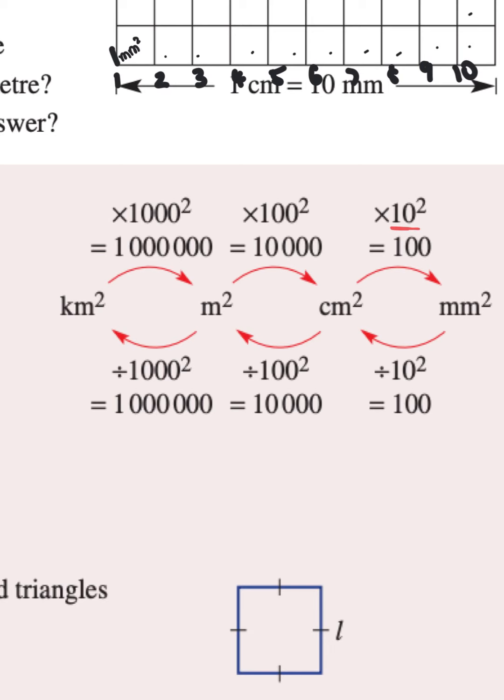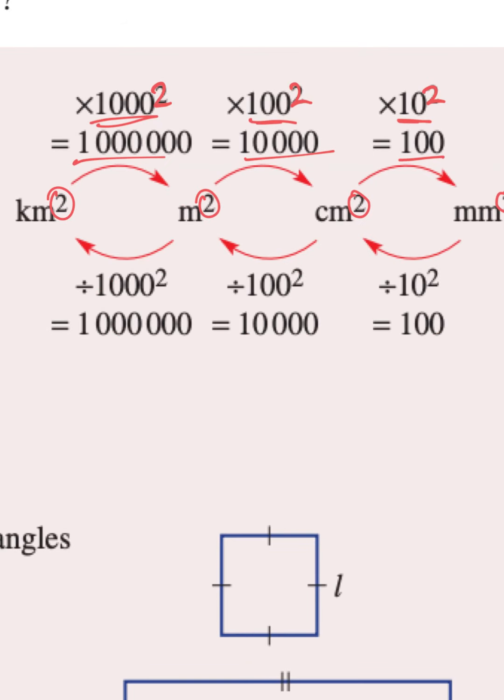So what's happening here is that we had 10, 100, 1000, but to convert between the units squared, which are units for area, you just have to square these numbers. So 10 squared is 100, 100 squared is 10,000, and a million. So now hopefully you can figure out how to convert not only units of length but units of area too.